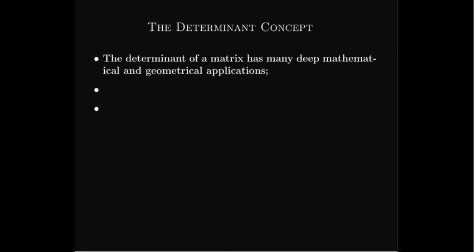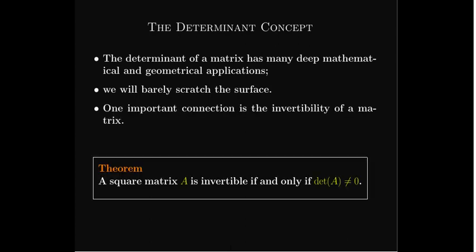The determinant is deep. You could spend an entire mathematical career studying the determinant in its many forms, but we're going to just barely touch the surface for our use here. One important connection we can make right away is the connection to invertibility: a square matrix is invertible if and only if it has a non-zero determinant. If the determinant is zero, you know right away that the matrix is not invertible.